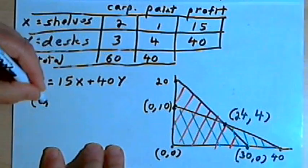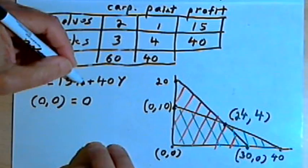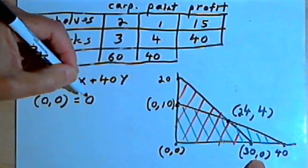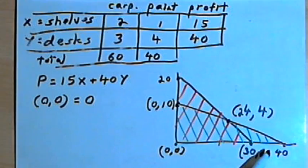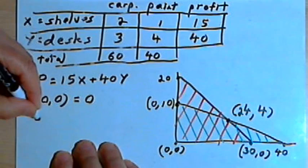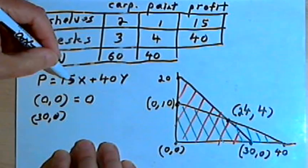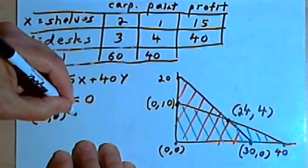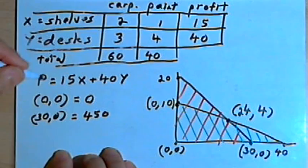So let's start with the origin. The profit at the origin, when x is zero and y is zero, the profit would just be zero. They're not selling any desks or shelves, so there's no profit involved. If we go over here to 30, zero, this is what happens when they make 30 shelves and no desks. At 30, zero, we want 30, which is x, times 15, that's 450, and 0 times 40 is zero, so the profit there would be $450.